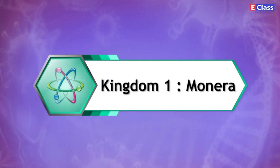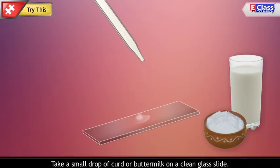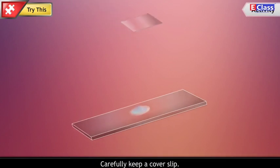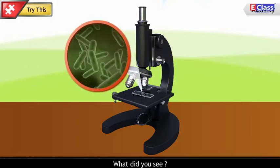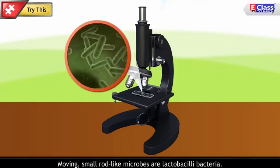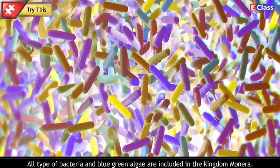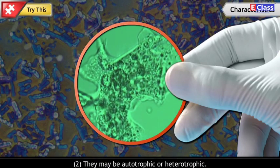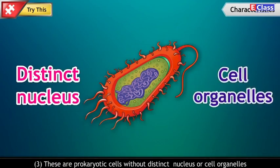Kingdom 1: Monera. Activity: Take a small drop of curd or buttermilk on a clean glass slide, dilute it with a little water, carefully keep a cover slip, and observe it under high power of a compound microscope. The moving small rod-like microbes you see are Lactobacilli bacteria. All types of bacteria and blue-green algae are included in Kingdom Monera. Characteristics: All organisms are unicellular; they may be autotrophic or heterotrophic; these are prokaryotic cells without a distinct nucleus or cell organelles.